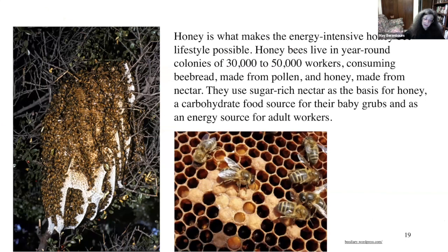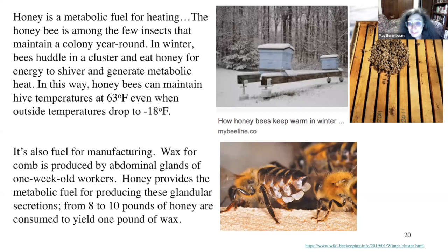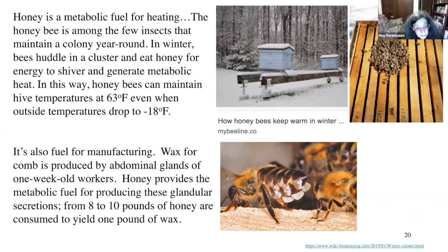Honey's nutritional content makes the energy-intensive honeybee lifestyle possible. Honeybees live in year-round colonies of 30–50,000 workers, consuming bee bread made from pollen and honey made from nectar. Honey serves as a carbohydrate food source for grubs, an energy source for adult workers, and a metabolic fuel for heating. Honeybees are among the few insects that maintain colony warmth in winter — huddling in a cluster and eating honey to shiver and generate metabolic heat. Honey also fuels wax manufacturing — about eight to ten pounds of honey are consumed to yield one pound of wax.